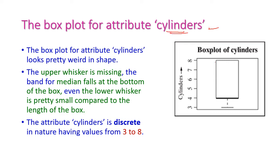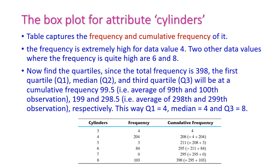First, let us see the box plot for the attribute cylinders. Here the upper whisker is missing — there is no upper whisker. The median band falls at Q1, at the bottom of the box, and the lower whisker is also very small. This indicates the cylinder attribute is discrete in nature.